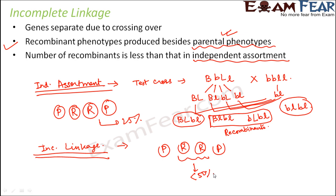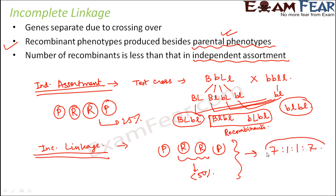This percentage of recombinants keeps varying depending upon the extent of linkage between the genes. For example, in the sweet pea example, the ratio obtained was 7:1:1:7 — showing more parental types and very few recombinants. Had it been completely linked, the ratio would have been 1:1 with all parental types.